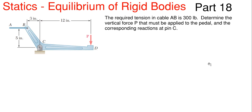In today's video, we're going to be looking at statics, equilibrium of rigid bodies, and we're going to be finding some reactions. This will be our 18th part in this particular series. What we have is that the required tension in cable AB is 300 pounds. We need to determine the vertical force P applied to the pedal that creates this 300 pounds of force in that cable, and we also have to determine the corresponding reactions at pin C.